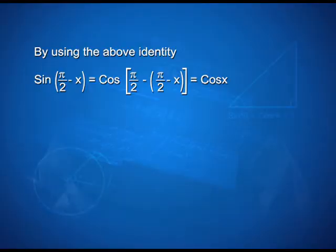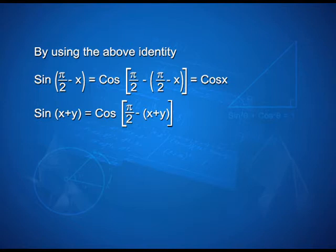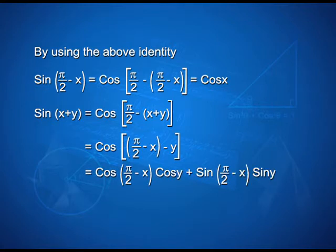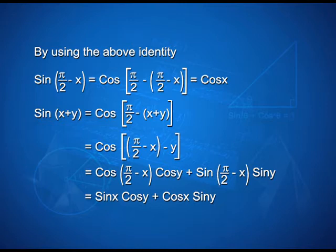Using the above identity, sin(π/2 − x) = cos(π/2 − (π/2 − x)), which simplifies to cos x. In the same way, sin(x+y) = cos(π/2 − (x+y)) = cos((π/2 − x) − y), which can be expressed as cos(π/2 − x)·cos y + sin(π/2 − x)·sin y. Thus we get the new identity: sin(x+y) = sin x·cos y + cos x·sin y.